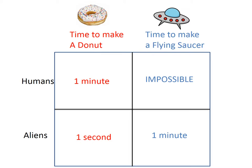Why don't you pause the video and think of the answer before going on? Well, absolute advantage refers to resource costs, and time is a resource cost. So the aliens have an absolute advantage both in making donuts and flying saucers. But comparative advantage looks at opportunity cost. We have no opportunity cost of making a donut because we couldn't have spent that time building a flying saucer. The aliens do have an opportunity cost of making a donut — every time they make a donut they give up 1/60th of a flying saucer. So the theory of trade says humans and aliens should each produce what they have a comparative advantage in: humans should make donuts and the aliens should make flying saucers.